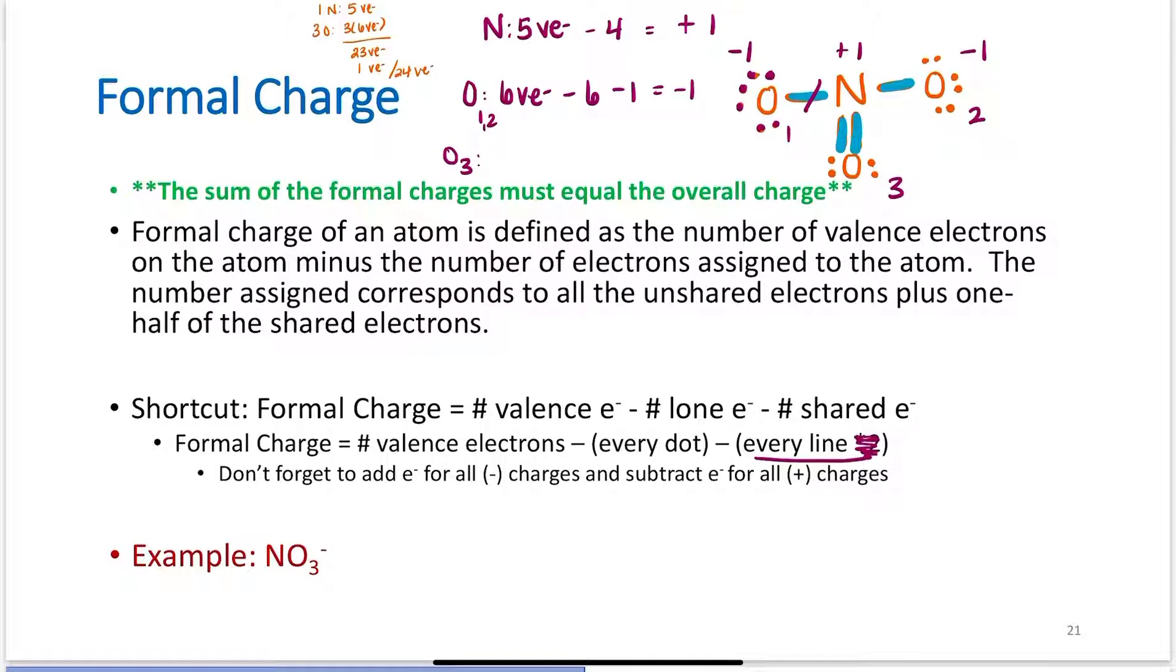My third oxygen: 6 valence electrons, 1, 2, 3, and 4, and 1, 2 bonds. Has 0 overall charge. In this molecule, the nitrogen has a plus 1 formal charge. Two of my oxygens have a negative 1 formal charge. And my one oxygen has a 0 overall charge. Adding these up, negative 1 plus 1 minus 1 plus 0 gives me an overall negative 1 charge, which is correct because nitrate has an overall negative 1 charge.